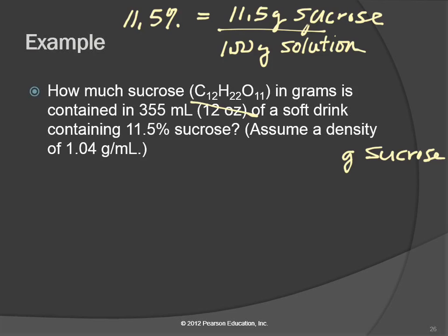So two of those numbers have per units, right? Grams per hundred grams. Grams per milliliters. Those are conversion factors. The only one that doesn't have a per unit is this 355 milliliters. 355 milliliters of what? Soft drink. The soft drink is the solution. A soft drink, a soda, is water with stuff in it, right? So that's the solution.